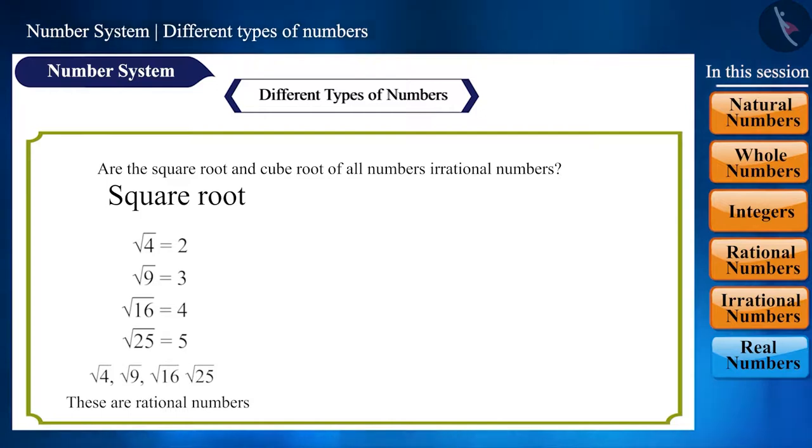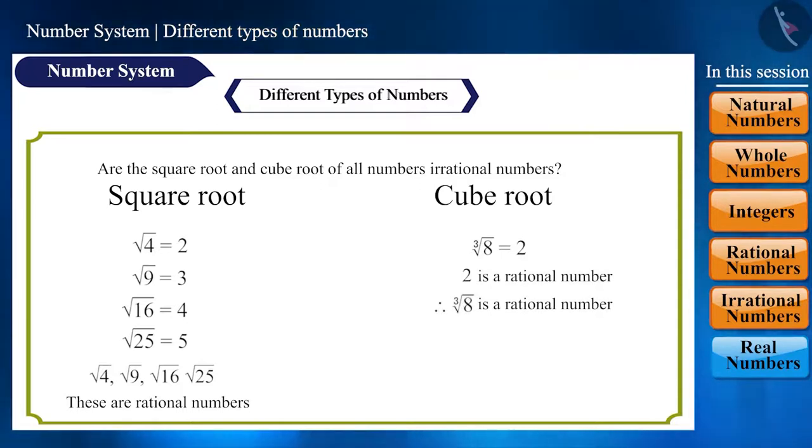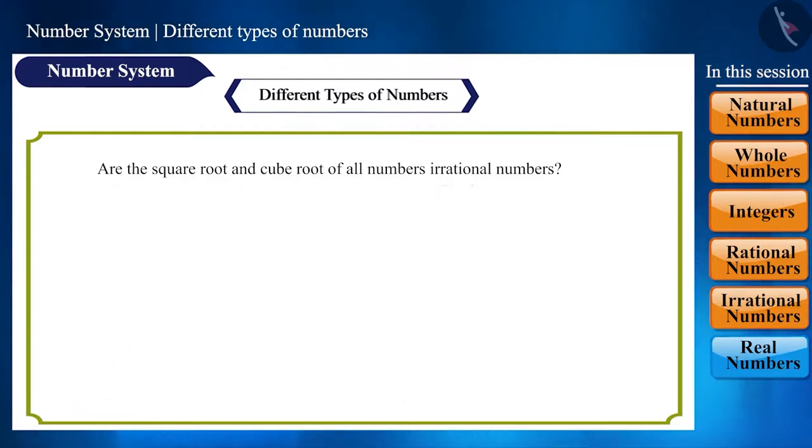And now speaking of cube root, cube root of 8 is 2, which is a rational number. Therefore, cube root of 8 is a rational number. Similarly, cube root of 27, cube root of 64, and cube root of 125 are rational numbers. Numbers that are perfect square roots or perfect cube roots are called rational numbers.